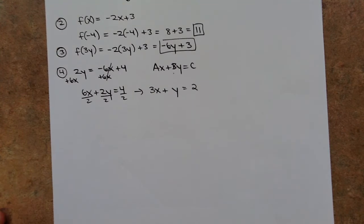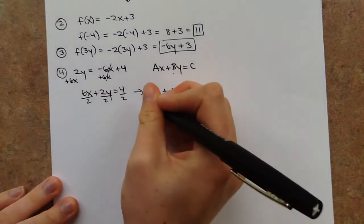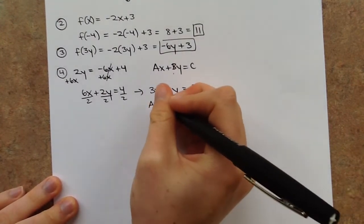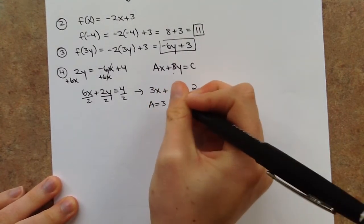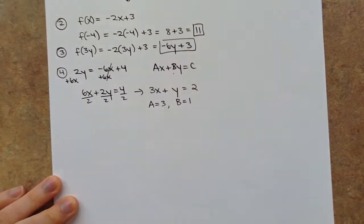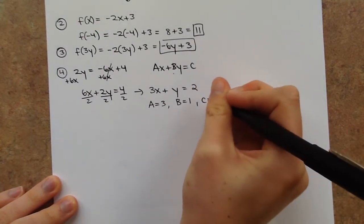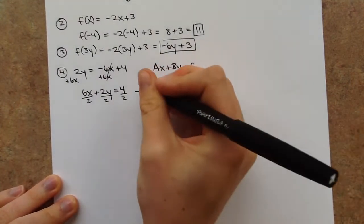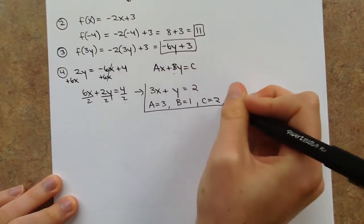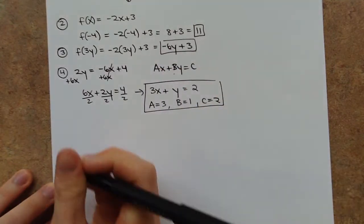Rewriting: 3x plus y equals 2. So a is 3, b is 1 (technically in front of the y), and c is 2. Be sure you're reading directions — if it tells you to identify them, make sure you do.